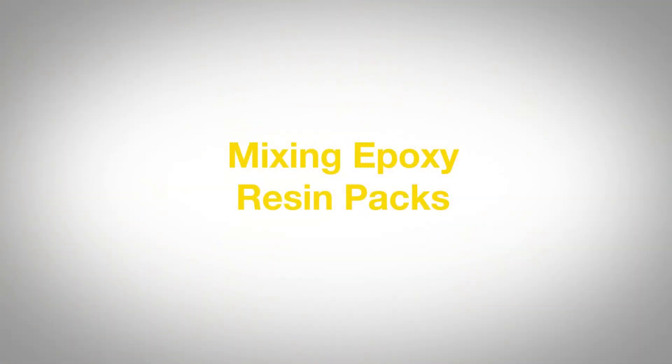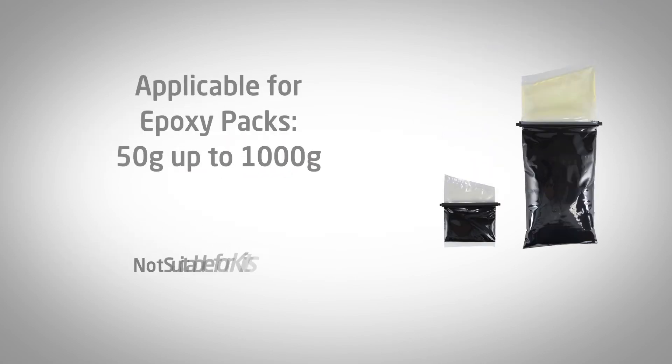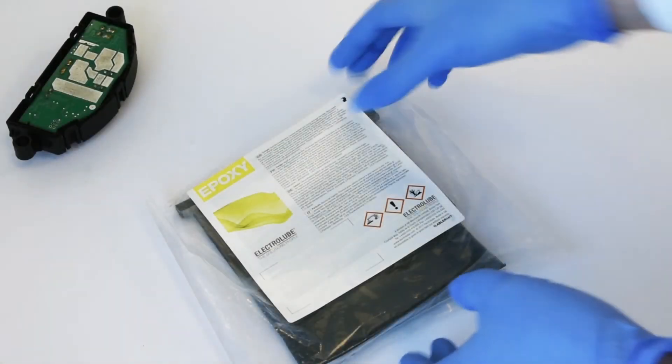Electrolube resin packs come in pre-measured packs ready to use. In this example video we are using a 250 gram resin pack which has a mix ratio of 2.5 to 1, but the process is essentially the same for all pack sizes.